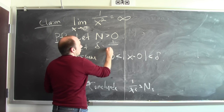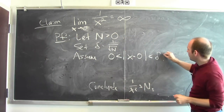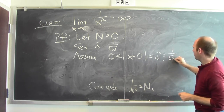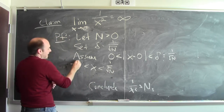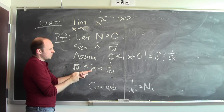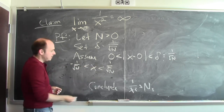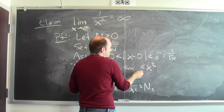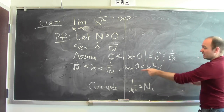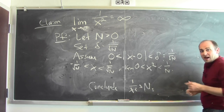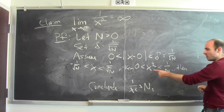Let's set delta equal to 1 over the square root of N. If delta equals 1/√N, then the absolute value of x is less than 1/√N, which means x is between −1/√N and 1/√N — that's what it means for x to be within delta of 0. Now if x is between −1/√N and 1/√N, then x squared is between 0 — and we know it's positive because x isn't 0 — and less than 1/N.